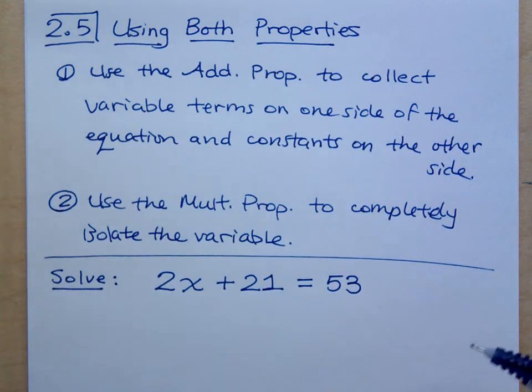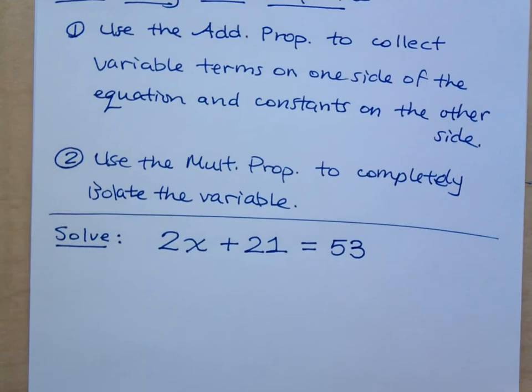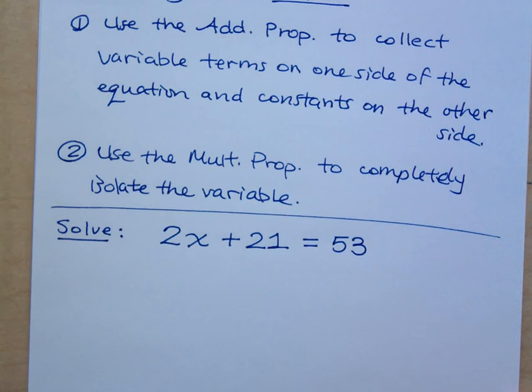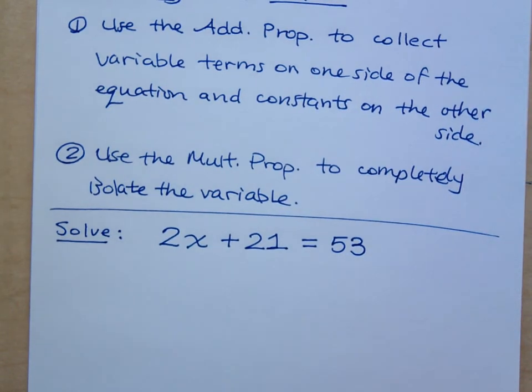So here, this guy looks kind of confusing because I can't get x by itself in just a single step. But the first step here says to use the addition property to separate your variables from your constants. So how can I do that? I need to move the 21 over.